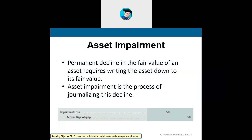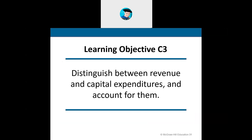There could also be asset impairment — a loss of the asset's value for whatever reason. For example, if a major repair was needed that didn't improve value but had the opposite effect, we would debit impairment loss and credit accumulated depreciation. Think of a major repair as asset impairment.